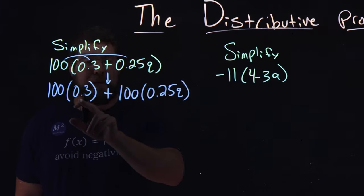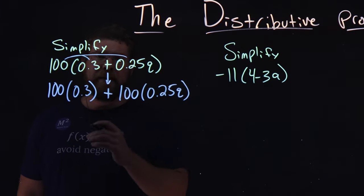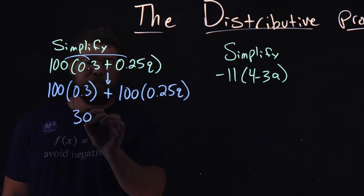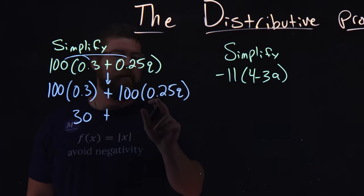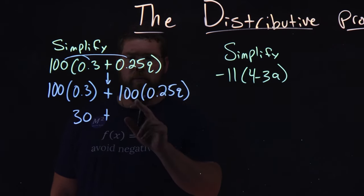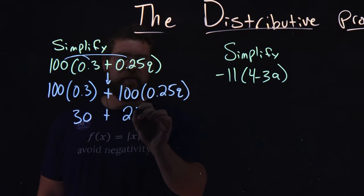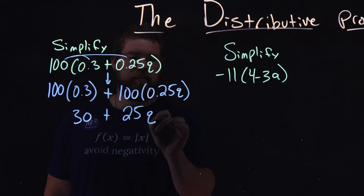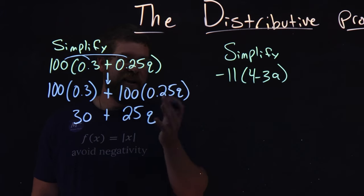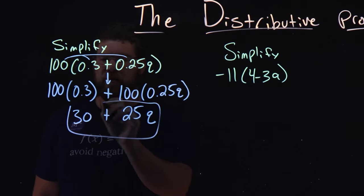And now we simplify this. 100 times 0.3 comes out to be 30, plus 100 times 0.25q. Multiply the coefficients, 100 times 0.25 is 25, and don't forget the q. We're done simplifying, they're not like terms, so we're kind of good right here.